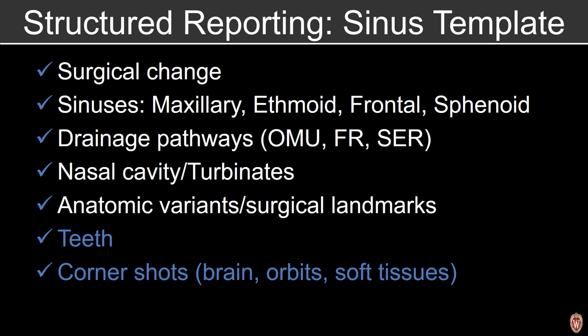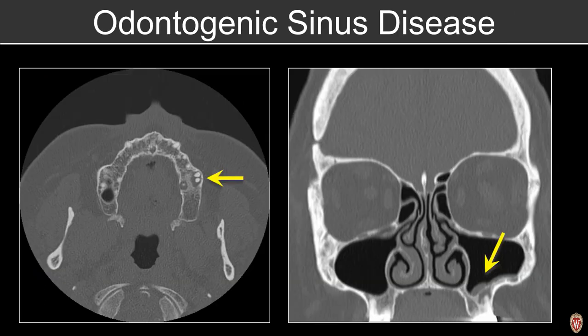Moving on to teeth and corner shots: it's not uncommon for sinonasal mucosal thickening to originate from the teeth. Especially if a patient is presenting with recurrent symptoms, we want to take a look at the adjacent teeth to look for an underlying periapical abscess, as we see in this example.